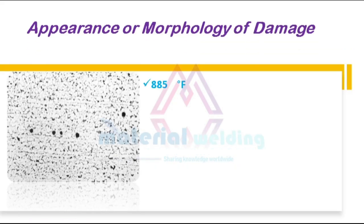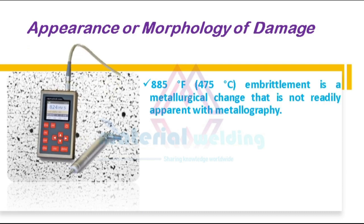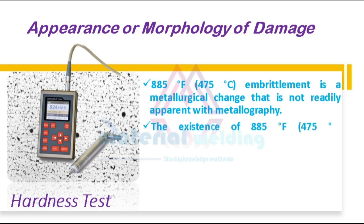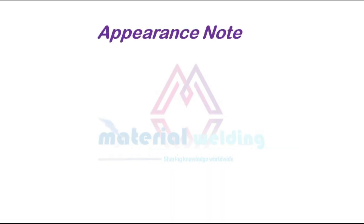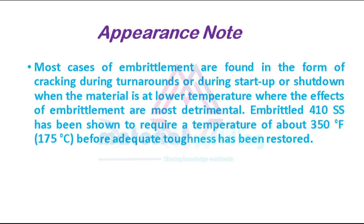885 degrees Fahrenheit embrittlement is a metallurgical change that is not readily apparent with metallography. The existence of embrittlement can possibly be identified by an increase in hardness in affected areas. Failure during bend testing or impact testing of samples removed from service is the most positive indicator. Most cases of embrittlement are found in the form of cracking during turnarounds, or during startup or shutdown, when the material is at lower temperatures where the effects of embrittlement are most detrimental. Embrittled 410 SS has been shown to require a temperature of about 350 degrees Fahrenheit or 175 degrees Celsius before adequate toughness is restored.